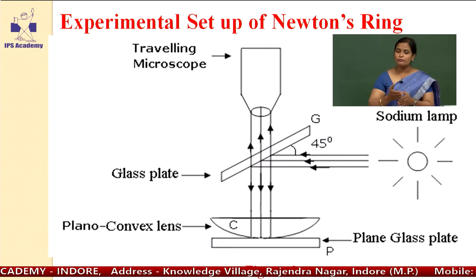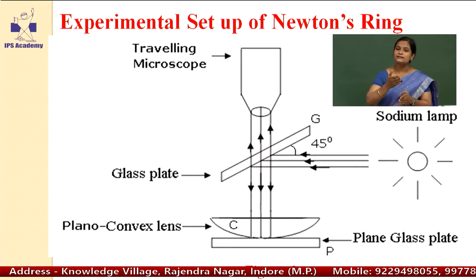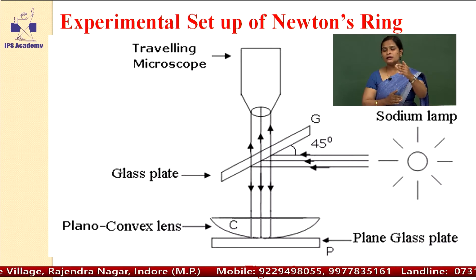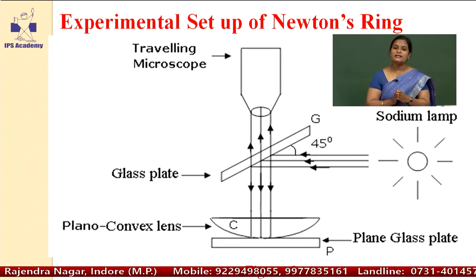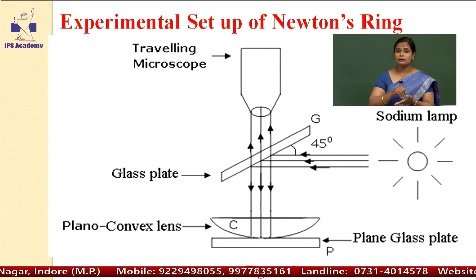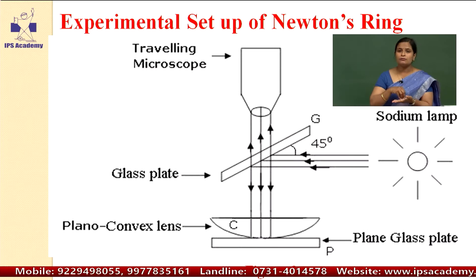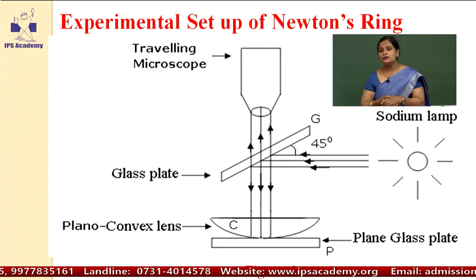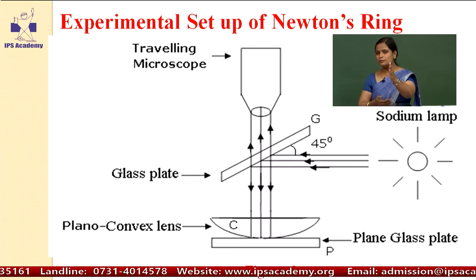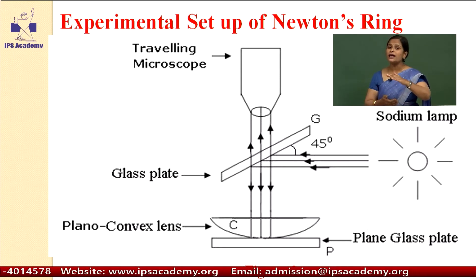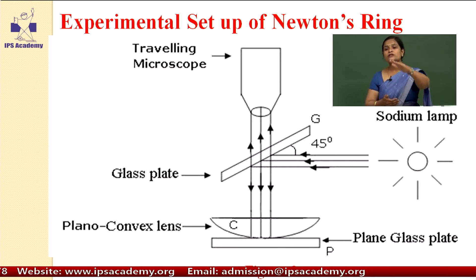The light coming from the sodium lamp has a wavelength of 5890 angstroms. It is incident towards the glass plate inclined at 45 degrees. After reflection, it bends normally towards the plain glass plate and plano-convex lens. When the light falls normally to the second medium, refraction takes place along the same path. The light is incident at the plain glass plate, falls downward, reflects from the plain glass plate P, and moves towards the travelling microscope.